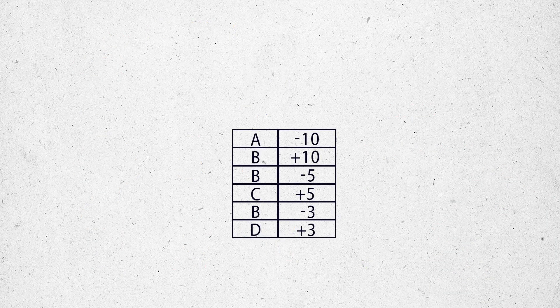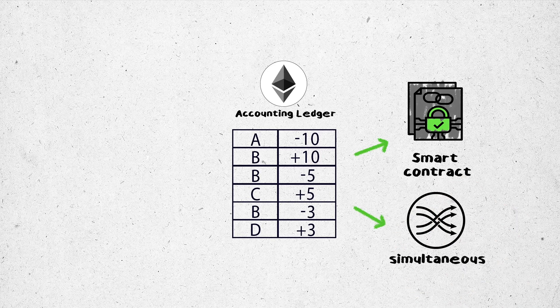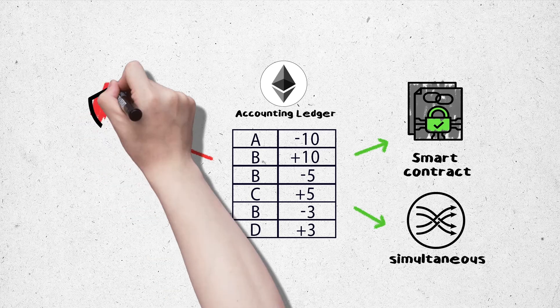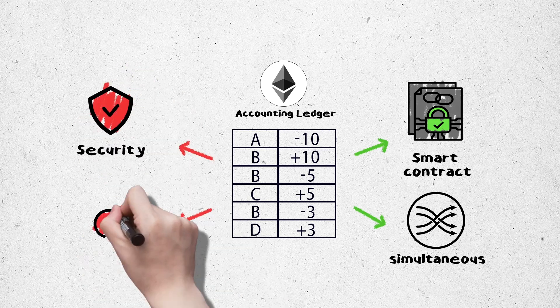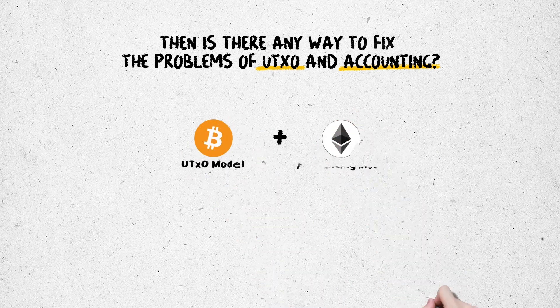On the other hand, in the accounting model, it is easy to carry out smart contracts because the ledger mechanism allows working several times with a specific account on the block. With this mechanism, Ethereum is very suitable for using concurrent transactions. On the contrary, this brings concerns about security and indeterminism.